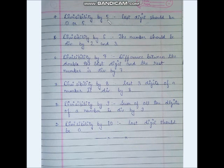Next is divisibility by 5. Numbers divisible by 5 are those whose last digit is either 0 or 5.